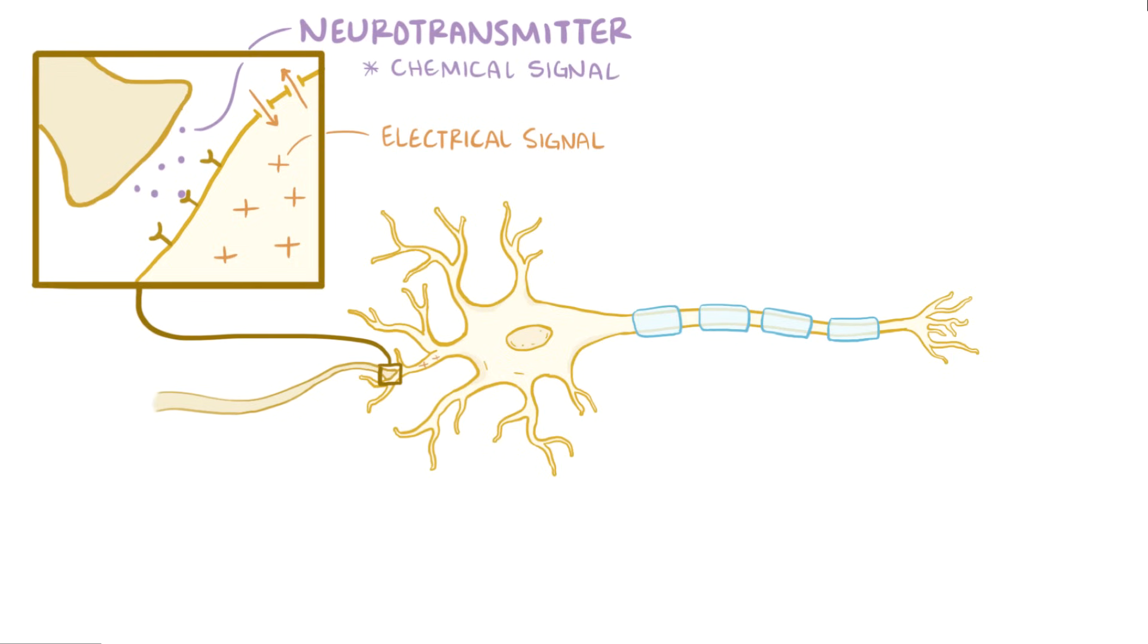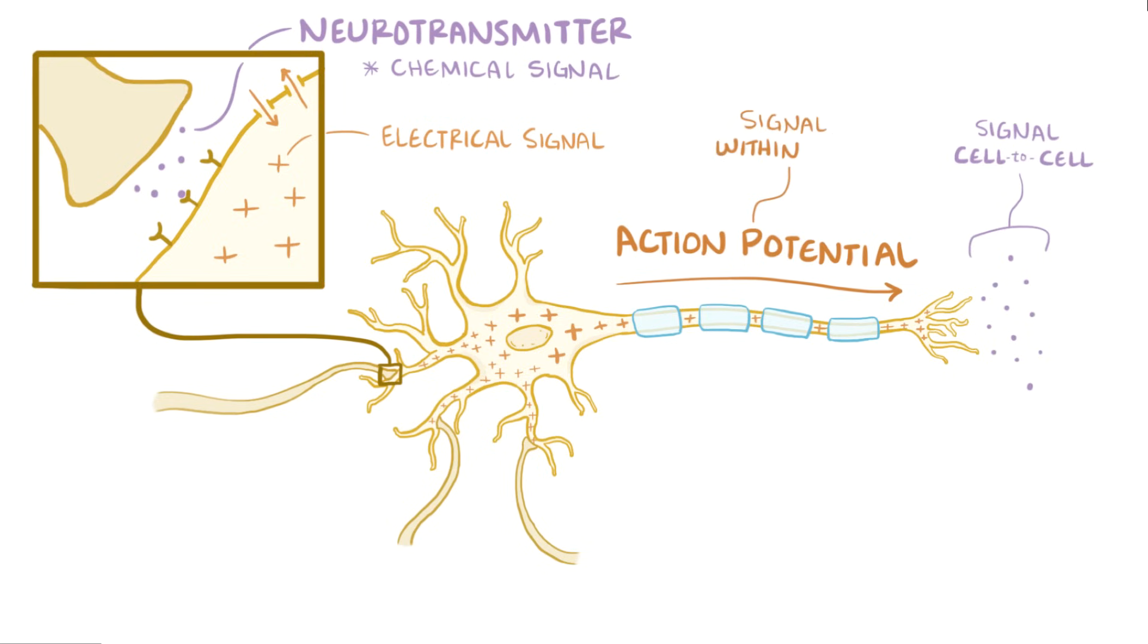Since a single neuron can have a ton of dendrites receiving input, if the combined effect of multiple dendrites changes the overall charge of the cell enough, then it triggers an action potential, which is an electrical signal that races down the axon up to 100 meters per second, triggering the release of neurotransmitter on the other end and further relaying the signal. So neurons use neurotransmitters as a signal to communicate with each other, but they use action potentials to propagate that signal within the cell.